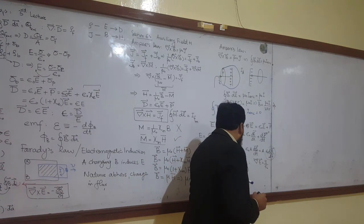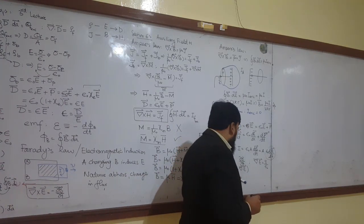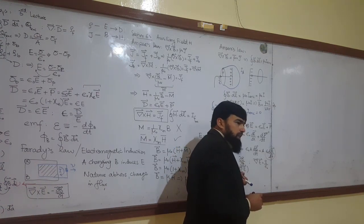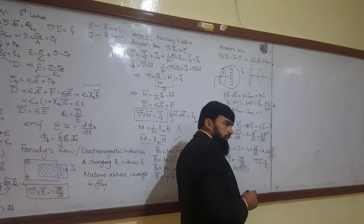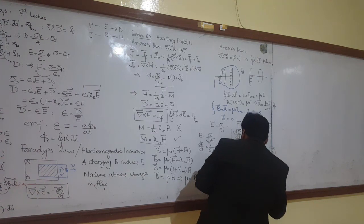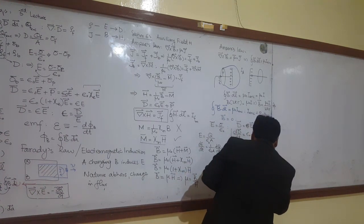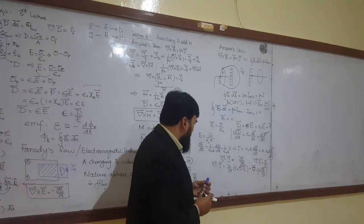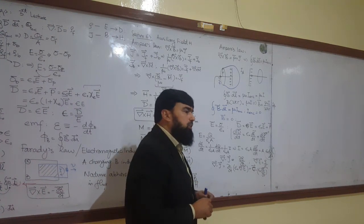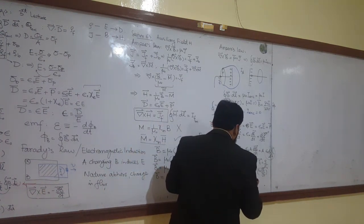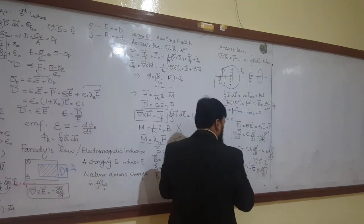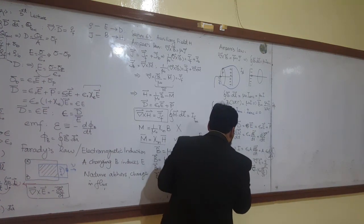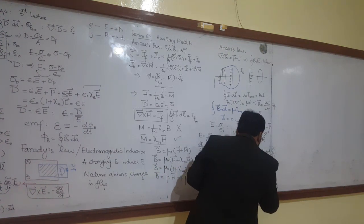Now if I write the divergence outside — this del is the space derivative so it has nothing to do with time — I can take it out and write this as the divergence of epsilon naught times del-E/del-t. And if I want to look at the minus sign here, then the minus sign will come here as well.